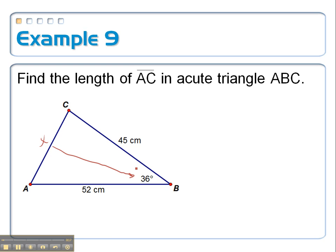So notice that I have enough information here to use the law of cosines. So this side is directly opposite this angle, so that's going to be like my C squared and my cosine of C on the other side of the equation. Here's going to be my A and my B.